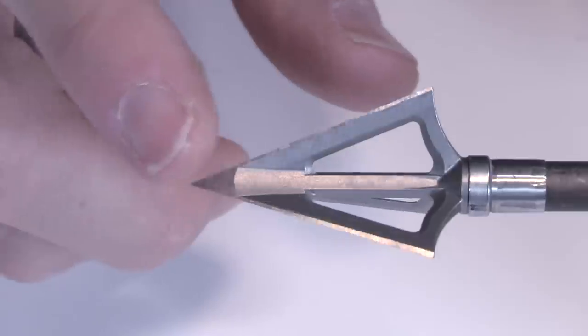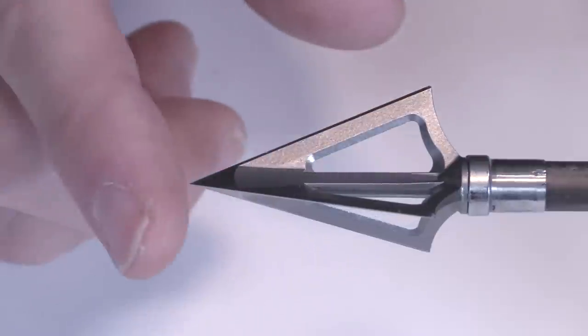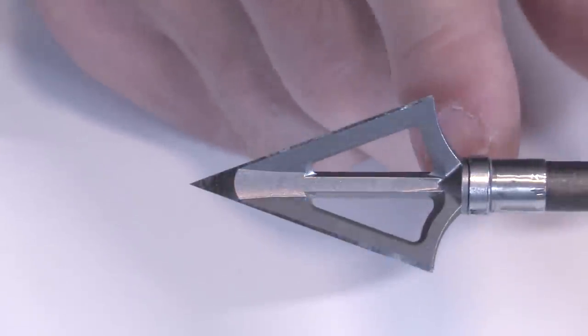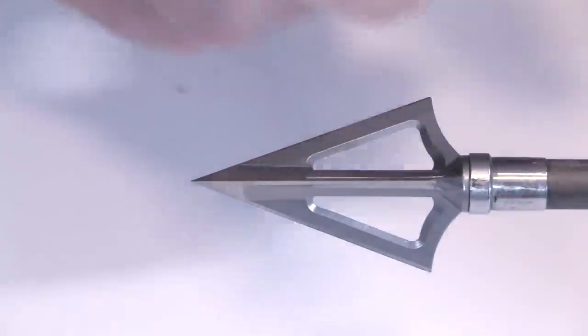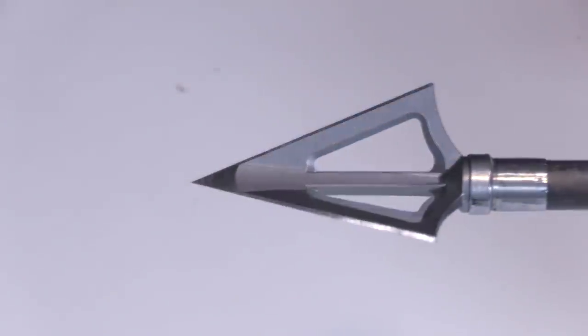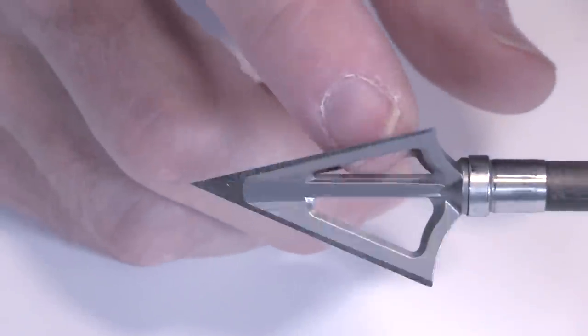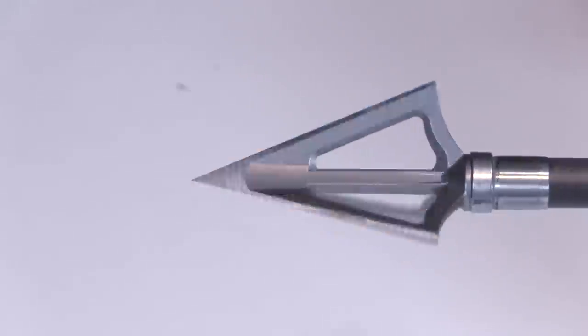You can see it has a really nice chisel tip that the blades come to, very pointy at the end, and the blades back here are cut out just to save some material, to save weight, as well as to make them a little bit more aerodynamic. You notice that it's extremely vented in the middle there.